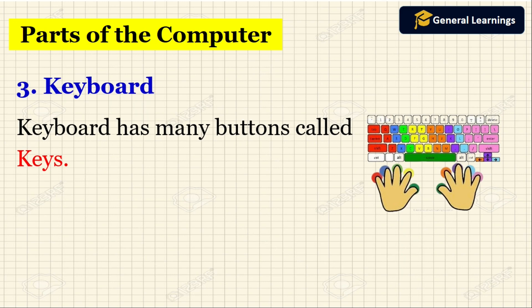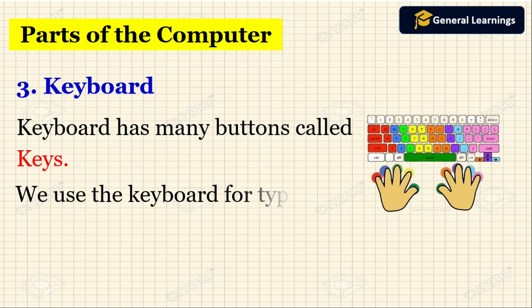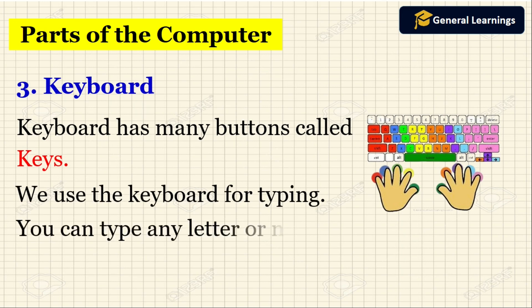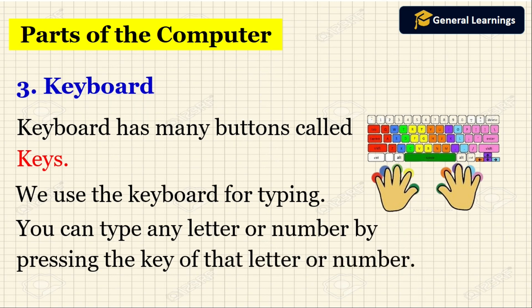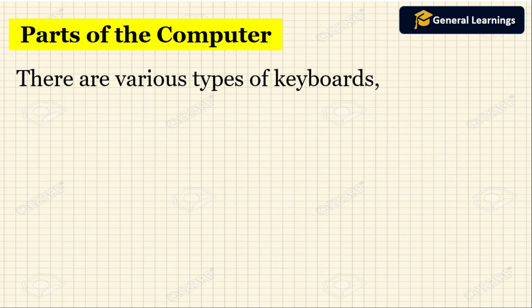The next part is the keyboard. The keyboard has many buttons called keys. We use the keyboard for typing — you can type any letter or number by pressing the key of that letter or number, and it will be displayed on the monitor. Now we will see the various types of keyboards available in the market.